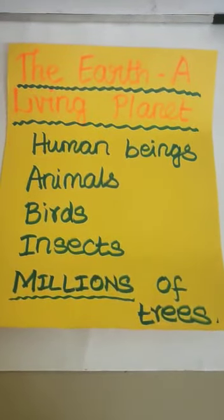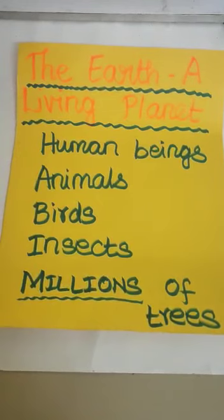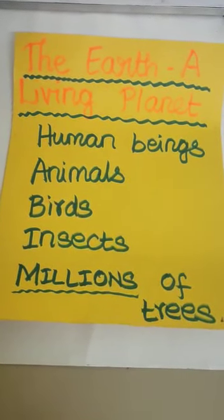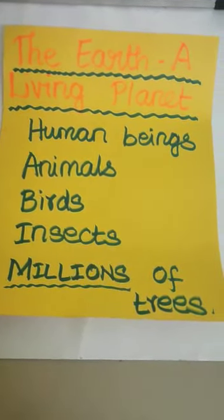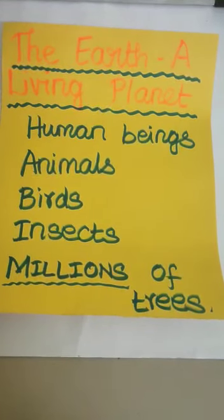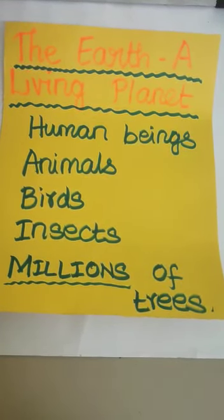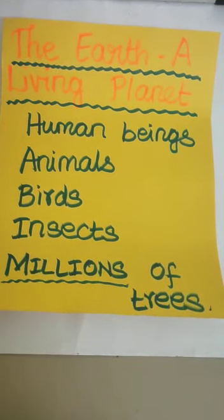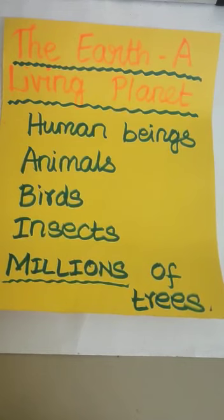The Earth is our home. Human beings, animals, birds, insects, and millions of trees live on the Earth. It is a beautiful living planet of the solar system. The Earth is spherical in shape and very big in size.